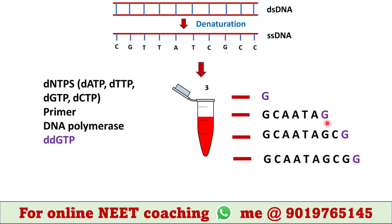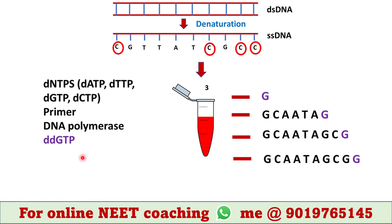In tube 3, ddGTP is used. That means it will be incorporated into the DNA when the complementary base is cytosine in the template DNA. As the template DNA contains 4 cytosines, ddGTP could be added in 4 places. Hence, we will get 4 types of DNA fragments here.